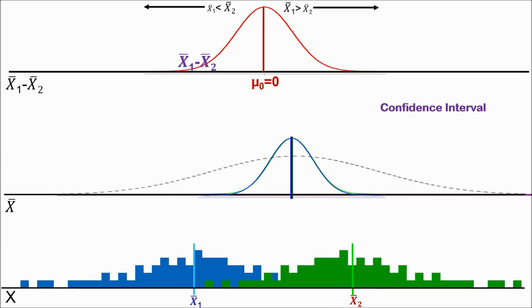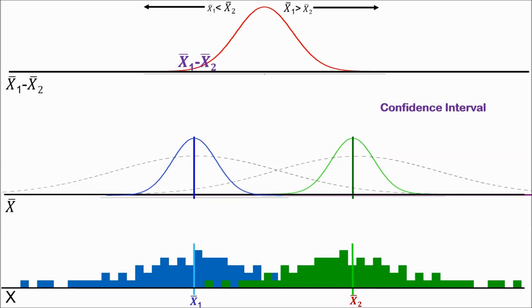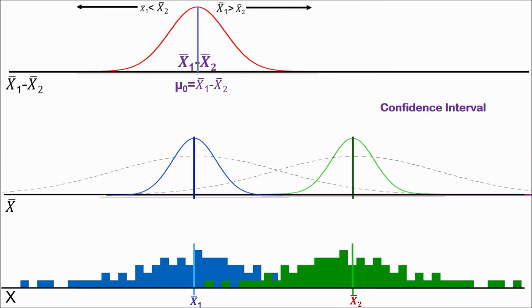A confidence interval does something different, just like with the single sample situation. The confidence interval says that there is a difference between the population means, and that difference is exactly the same as the difference between our sample means. With a confidence interval, we assume that the average difference between means in the population will be the same as the difference between means in our sample. So the sampling distribution of differences is now centered over our sample value. Note that the scale at the top — differences — is very different from the other two scales of raw values. And then we just find the tails of the sampling distribution. It's always just finding the tails.